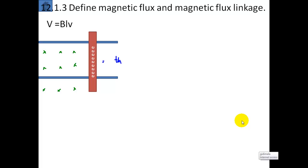In section 12.1.3, we define magnetic flux and magnetic flux linkage. We've seen that a metal conductor sweeping through the magnetic field will basically cut through some of the magnetic field or flux. How much flux it cuts through depends on the area.